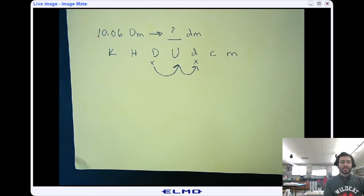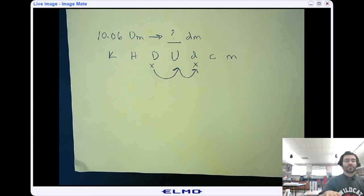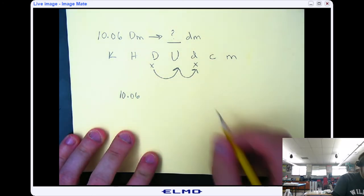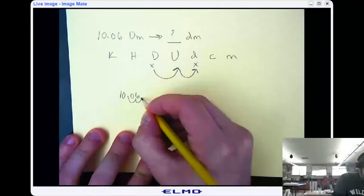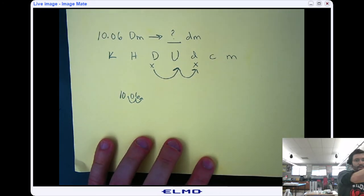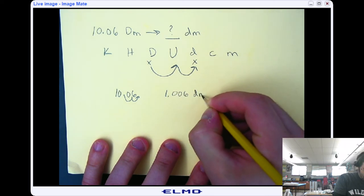So now, in class, sometimes people will say we just have to add the number of zeros by the number of jumps. Sometimes that is true, but you have to work around the numbers that are there first. So in this case, I've got 10.06, and we did two jumps to the right, one, two. I don't have to add any zeros because there are already numbers after the decimal point, and we end up with 1006 decimeters.